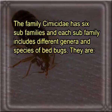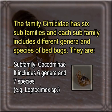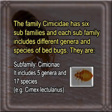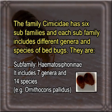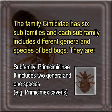The family Cimicidae has six subfamilies, each including different genera and species of bed bugs. They are: Subfamily Afrocimicinae, including eight to nine species, example Afrocimex constrictus. Subfamily Cacodminae, including six genera and seven species, example Leptocimex species. Subfamily Cimicinae, including five genera and seventeen species, example Cimex lectularius. Subfamily Haematosiphoninae, including seven genera and fourteen species, example Orthocoris pallidus. Subfamily Latrocimicinae, including only one genus, example Latrocimex. Subfamily Primicimicinae, including two genera and one species, example Primicimex cavernis.